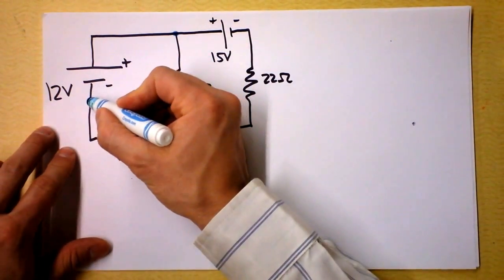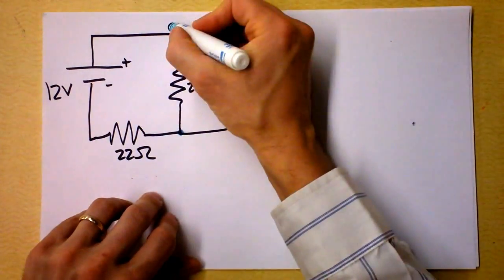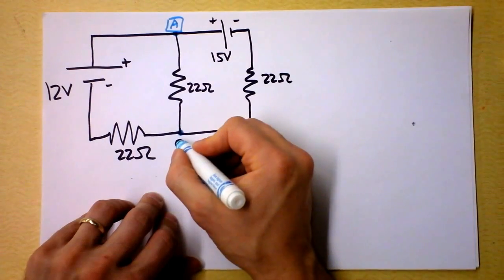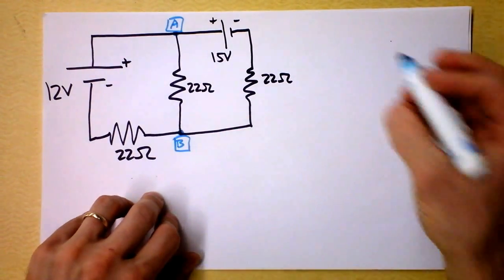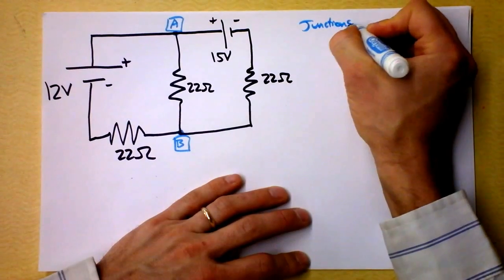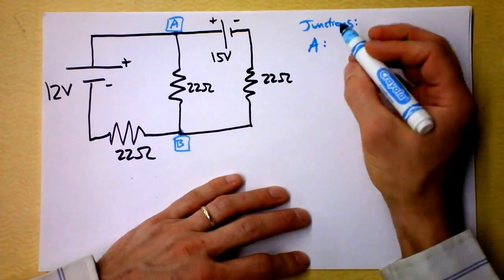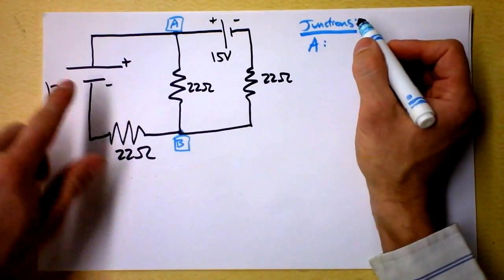In principle I could define any of these as junctions and they're really, really trivial. So let's define this location here as A and this location here as B and we will say that the junctions work like this. Junctions say A gives us, junction A gives us that, oh I've got to define all these currents right?